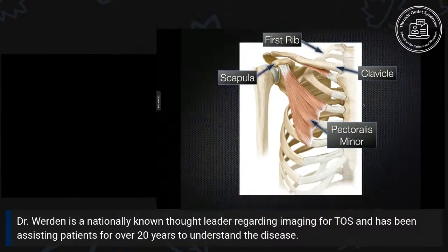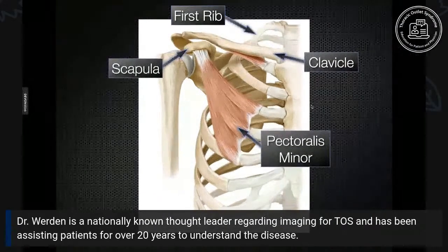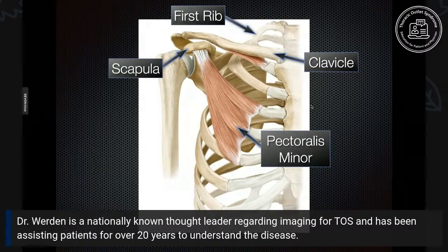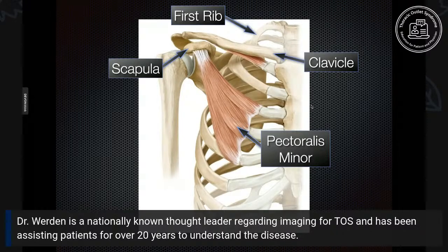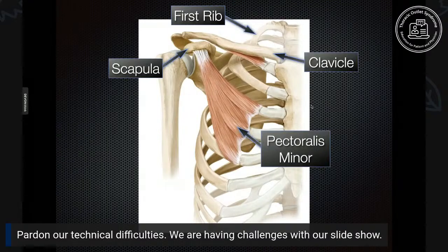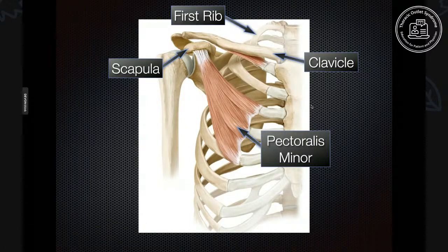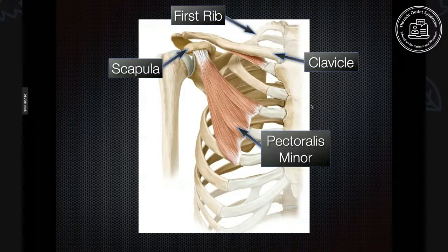The pathway of these nerves and blood vessels is to leave the neck and chest and go to the arm, or return from the arm. Anything that obstructs, compresses, or puts tension on them along the way can cause symptoms — that's thoracic outlet syndrome. The shoulder blade is attached to the collarbone, which is critically important: movement of the shoulder blade directly affects movement of the clavicle. The pectoralis minor muscle attaches the shoulder blade to the front of the chest wall.